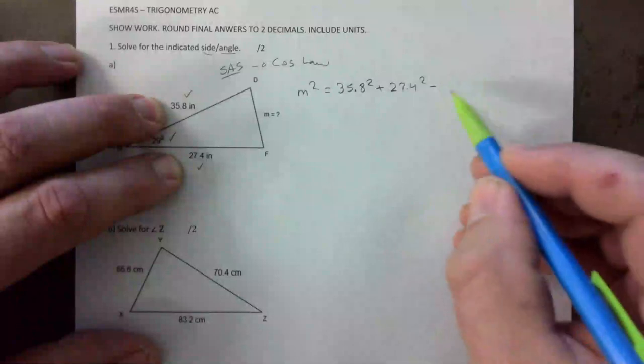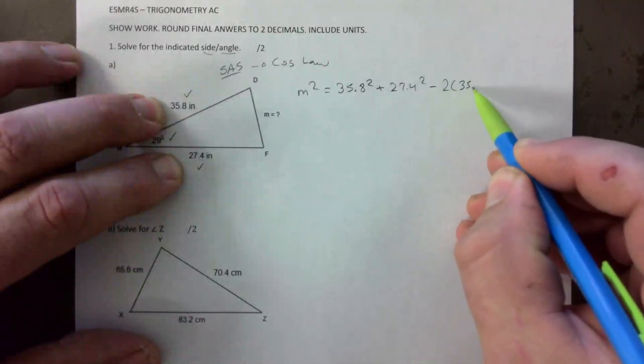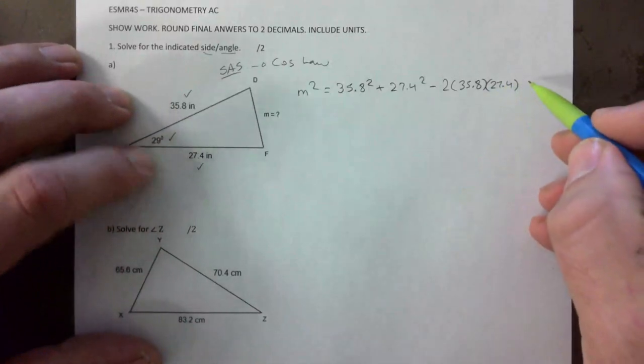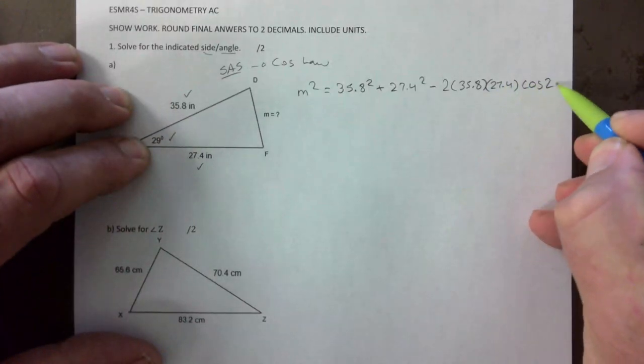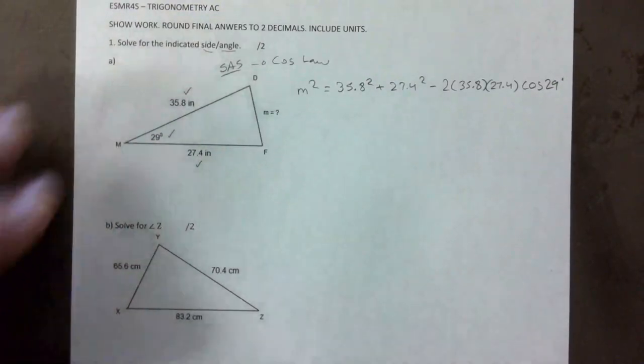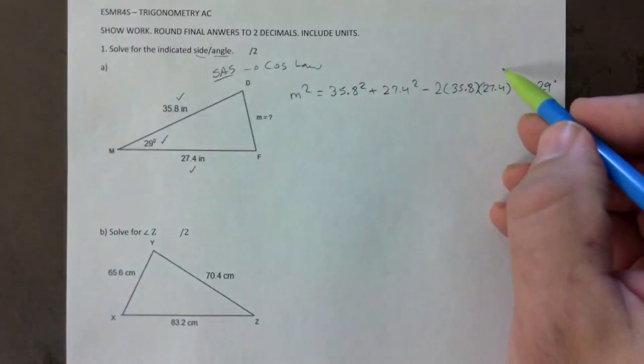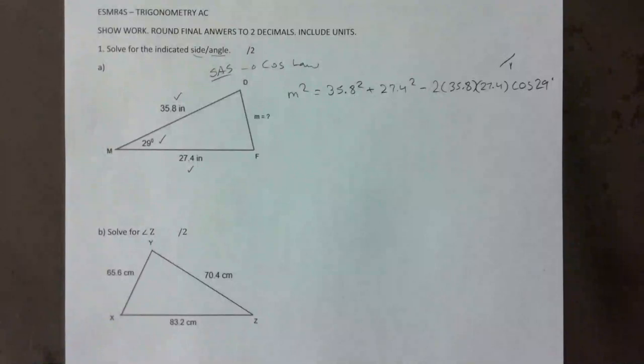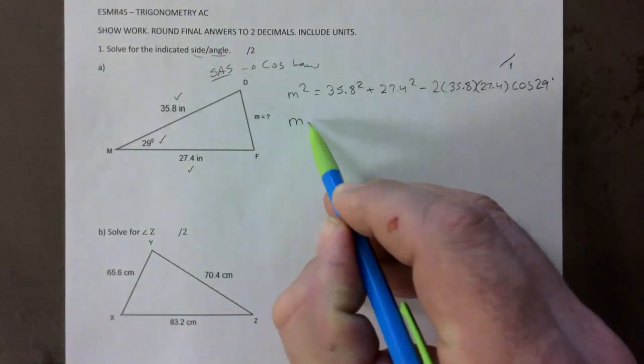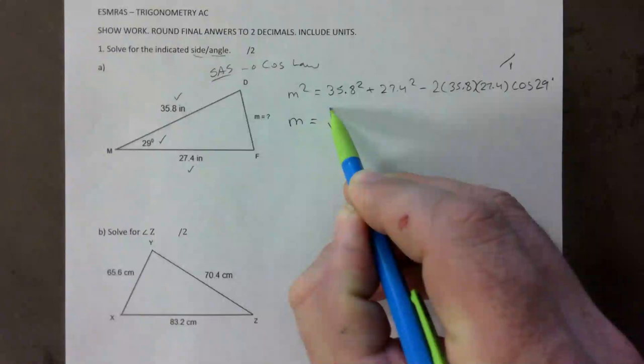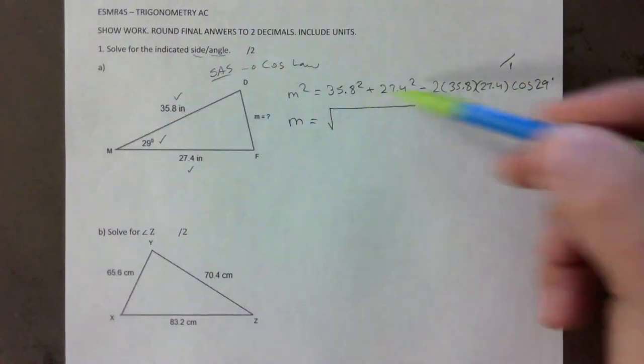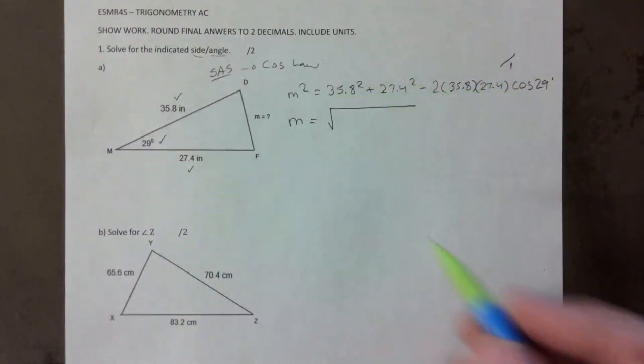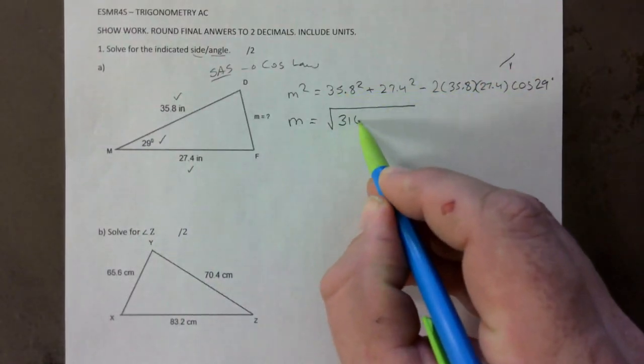And do that minus two times 35.8 times 27.4 times cosine of 29. If you have that you get a mark just for the fact that you pick cosine law and you set it up. Now we're going to get you another mark for the final answer. I would like to see the intermediate step, so what the root and what you get here when you type that in you get 316.